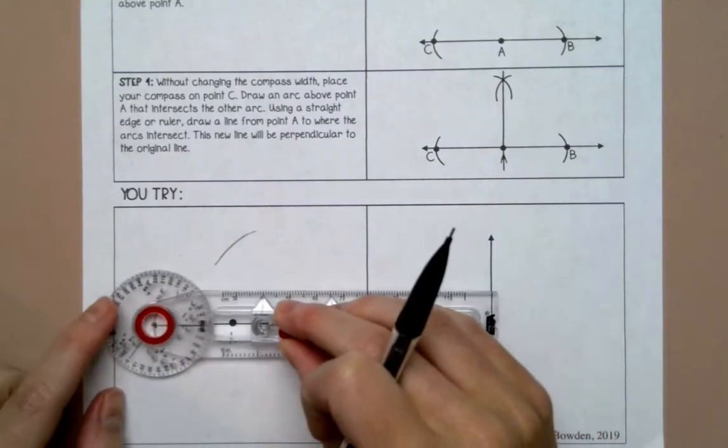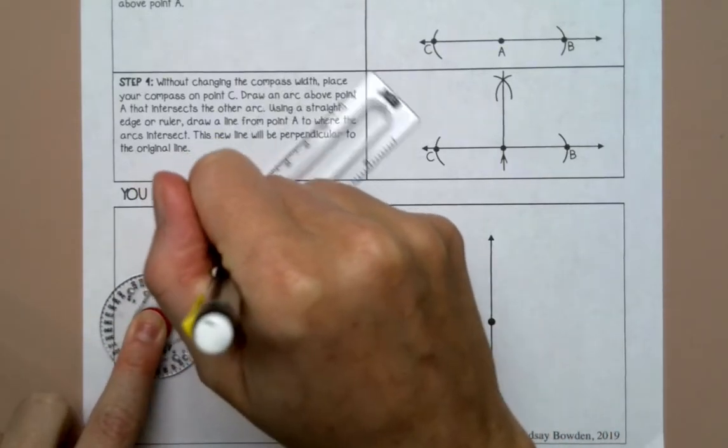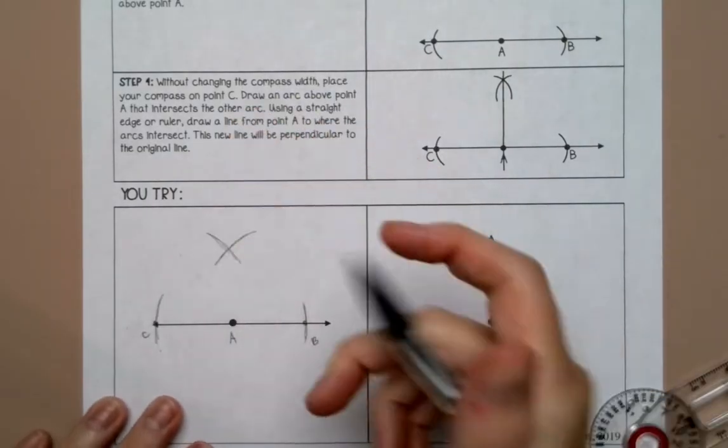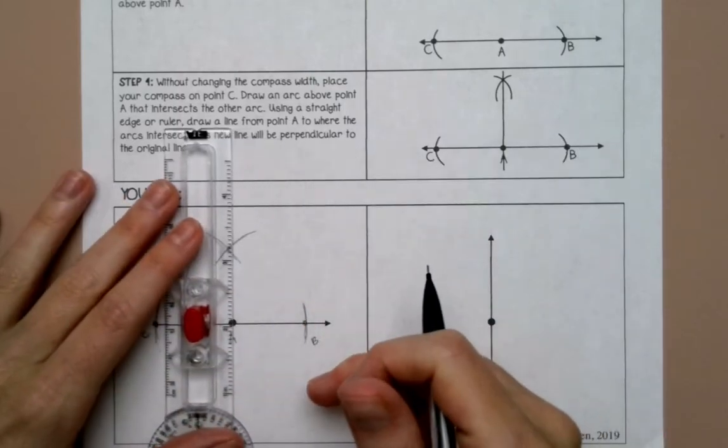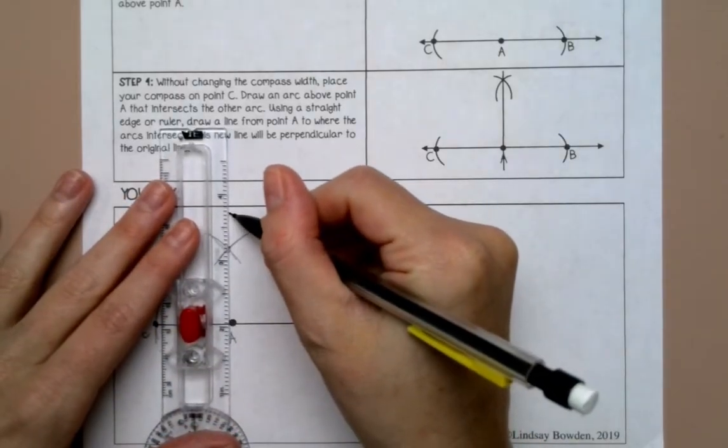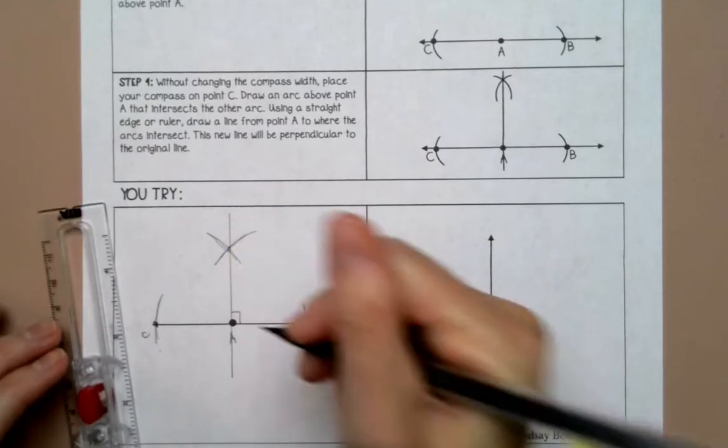Then without changing the width I'm going to do the same thing from C. And then I'm just going to connect where this intersects and point A. So that should be perpendicular.